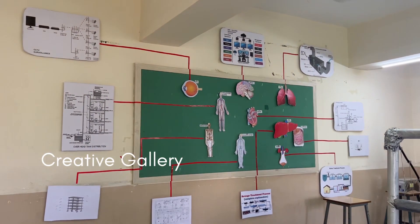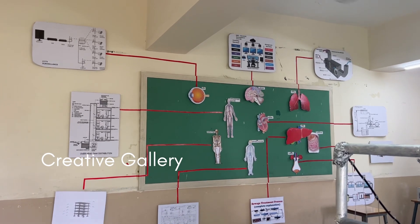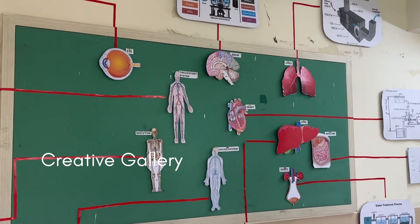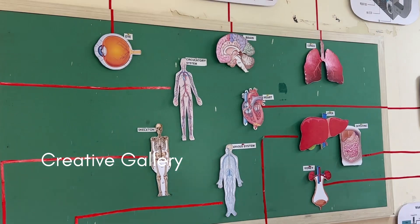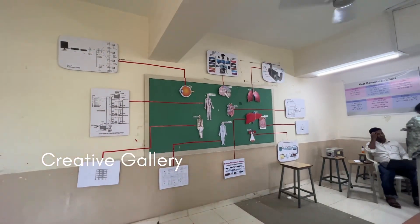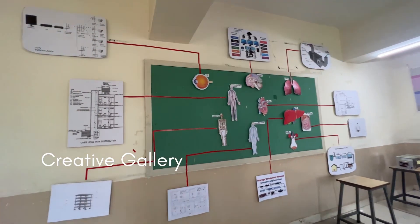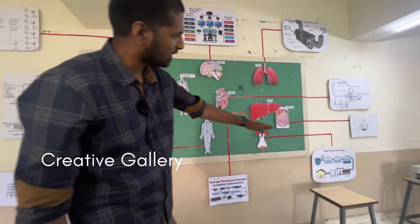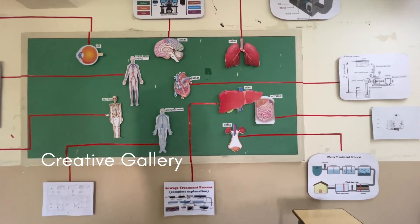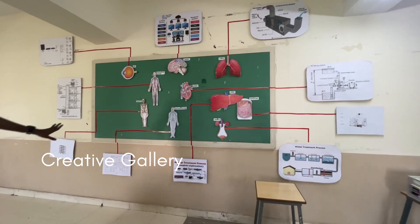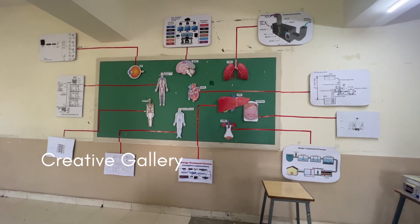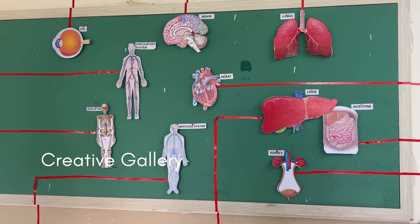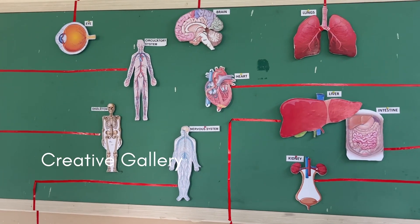This installation is planned to show how the human body system is correlated to a building system. The heart represents the pumping system, the brain is similar to a building management system, the lungs which filter our air are similar to an air handling unit, the kidneys are similar to a water treatment plant, the nervous system is similar to the wiring system, and the skeleton is similar to the structural system. A building basically works along similar lines to a human body.